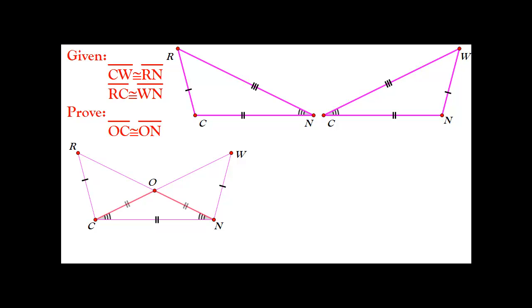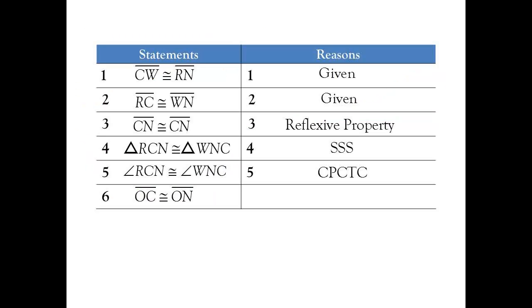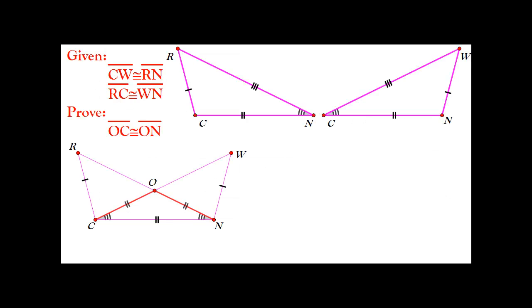And from that, we can conclude that segment OC and segment ON are congruent. And the reason for that is if two angles of a triangle are congruent, then the sides opposite them must also be congruent.